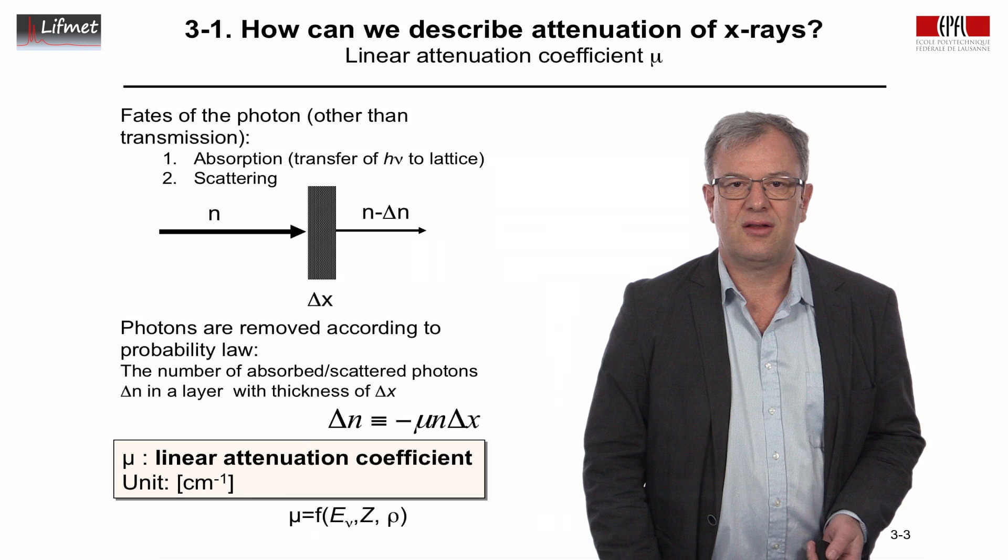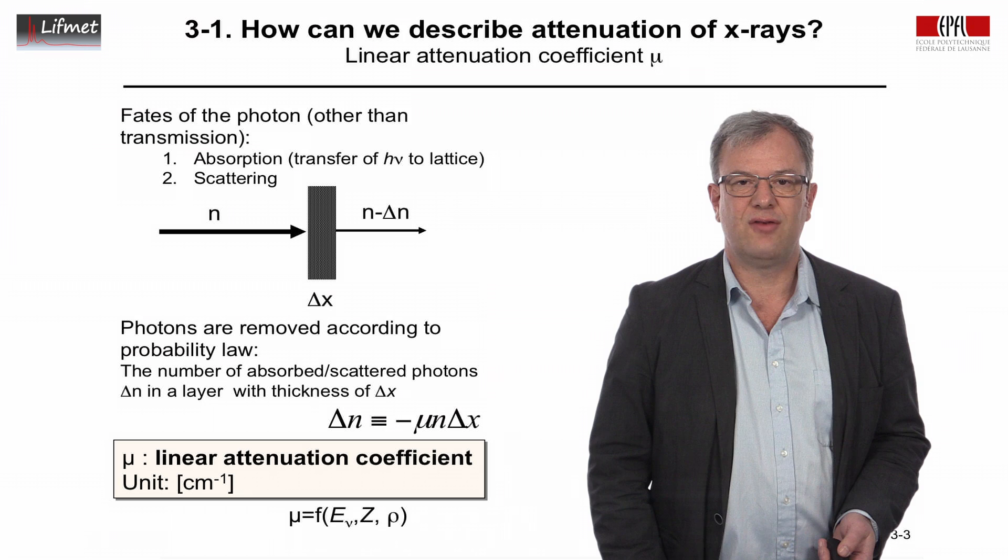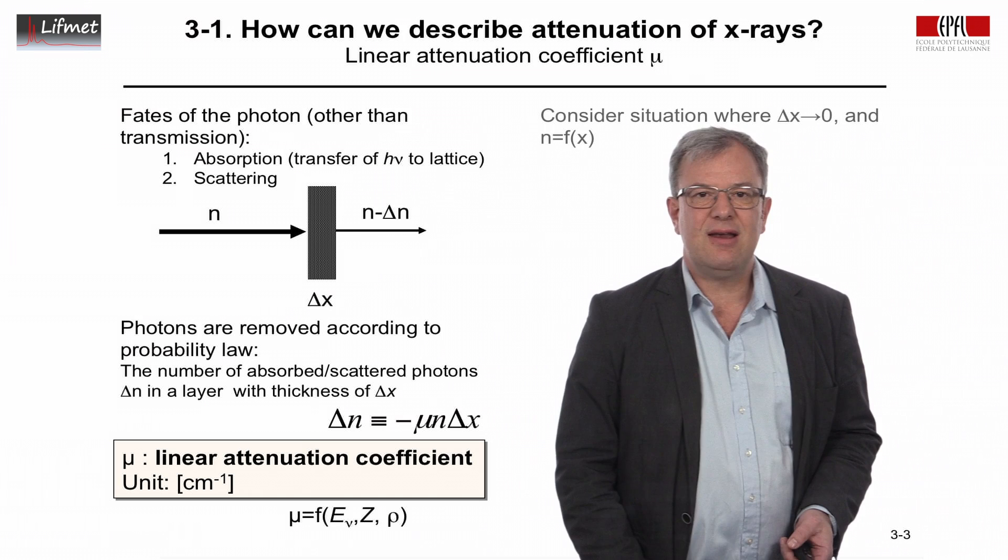Now, in reality, and this will be the subject of today's lectures, is that this linear attenuation coefficient is a function of the energy of the photon E, it's a function of the atomic number Z, and it's a function of the electron density ρ.